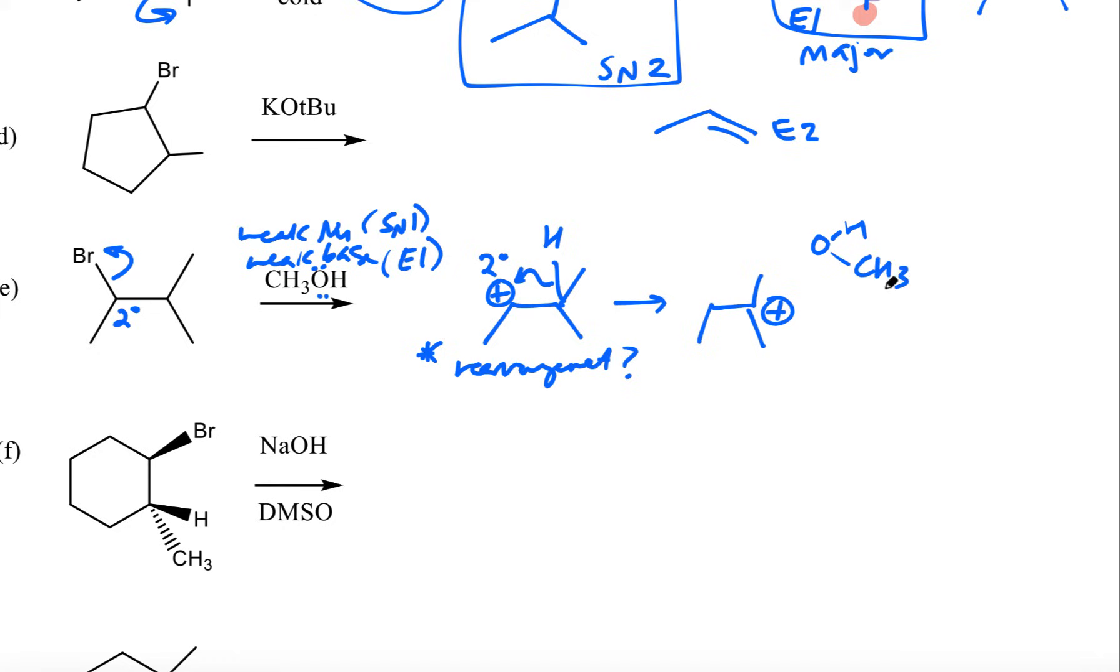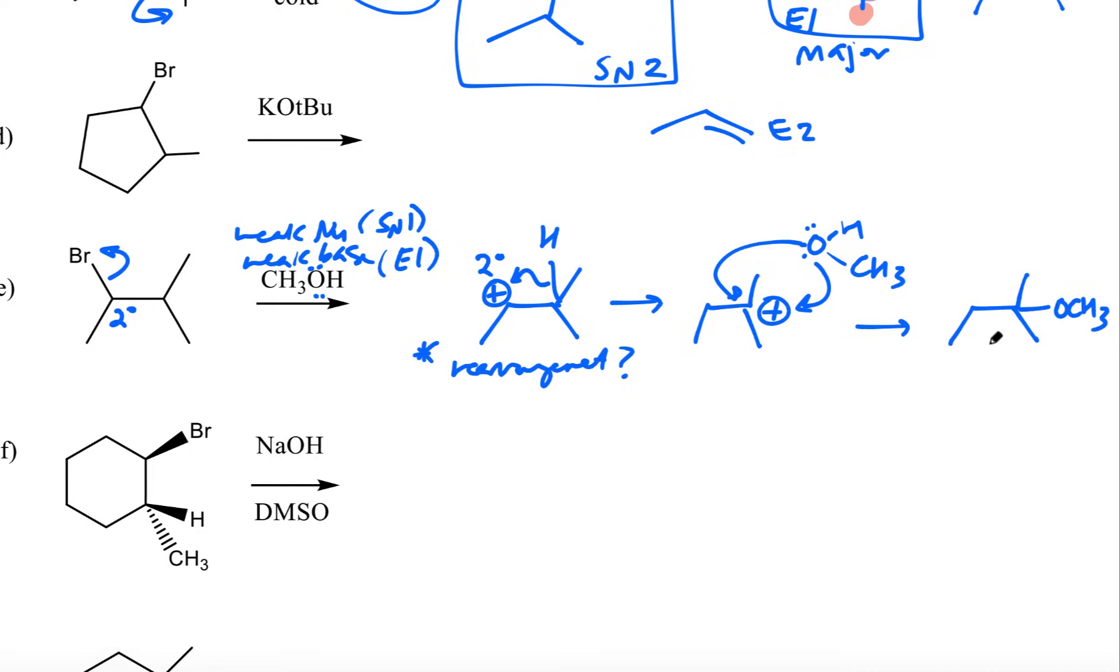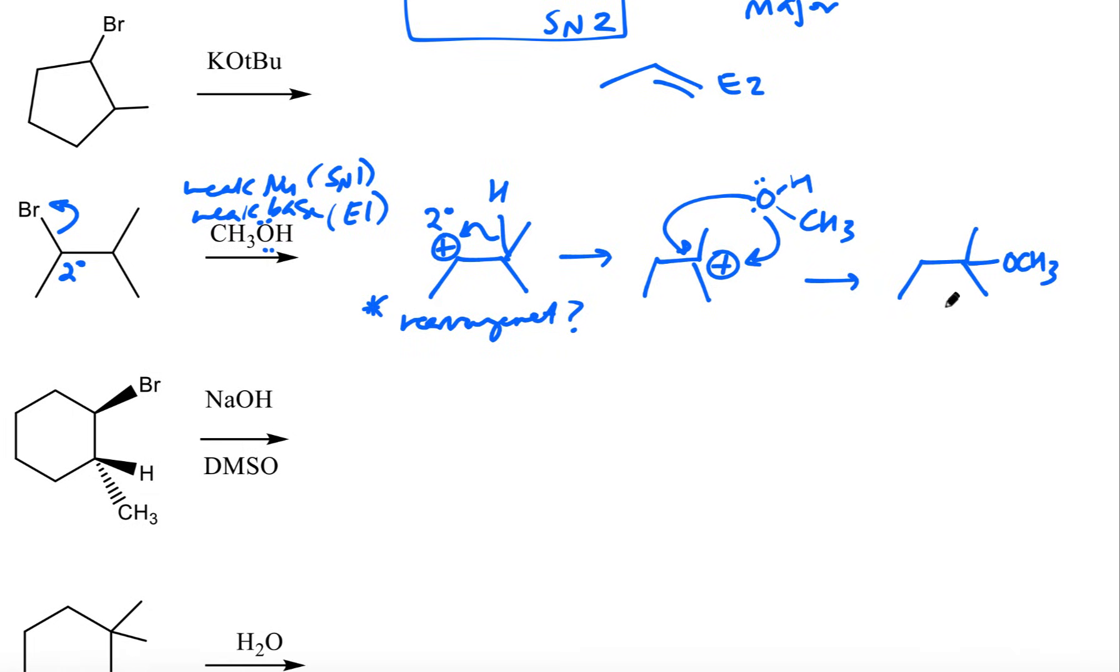From here, I'll go ahead and do my SN1 and E1. So what that means is, I'm going to do the SN1 by attacking that from either side. Again, this is achiral because I have two methyl groups. So it doesn't really matter in this case. But if I had three different groups here, then I would have both dash and wedge versions of this. Meaning, I have both enantiomers. And then the elimination of this creates either the Hoffman double bond or Zaitsev double bond. E1 usually goes by Zaitsev.